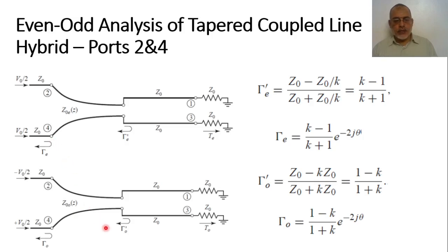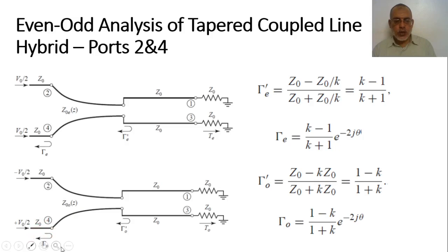Similarly, the odd mode reflection coefficient at the intersection, γ'_odd, uses impedance Z₀ minus the odd characteristic impedance K·Z₀ at this point: γ'_odd = (Z₀ − K·Z₀)/(Z₀ + K·Z₀) = (1 − K)/(1 + K). The odd reflection coefficient at port 4 is then γ_odd = γ'_odd · e^(−j2θ) = [(1 − K)/(1 + K)] · e^(−j2θ).